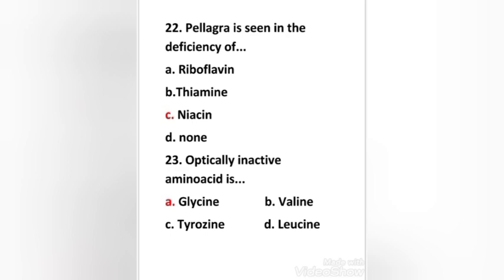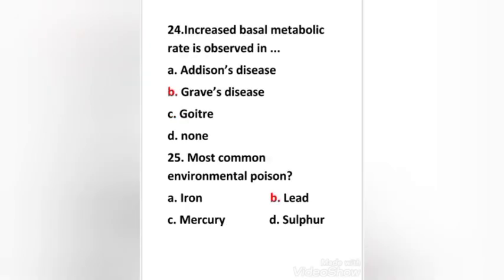Next question: Optically inactive amino acid is glycine, valine, tyrosine, leucine. Right answer is option A: glycine. Optically inactive amino acid is glycine. Next question: Increased basal metabolic rate is observed in Addison's disease, Graves disease, goiter, none. Right answer is option B: Graves disease. Increased basal metabolic rate is observed in Graves disease.